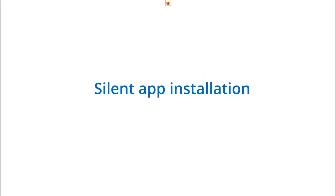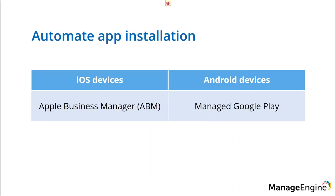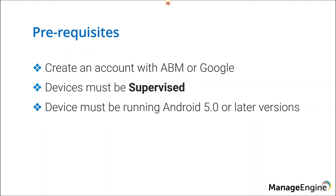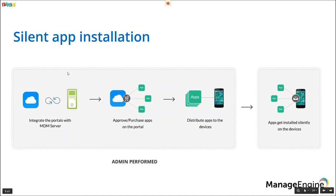We also have a way to silently install applications with certain prerequisites depending on the operating system. For iOS, you need to integrate your MDM server with Apple Business Manager (ABM). For Android, you need to integrate with Managed Google Play. For iOS, you need an ABM account, and the device must be supervised — added via Apple Business Manager or Apple Configurator — for truly silent installation without any user prompt. For Android, the device must be running Android 5.0 or later.